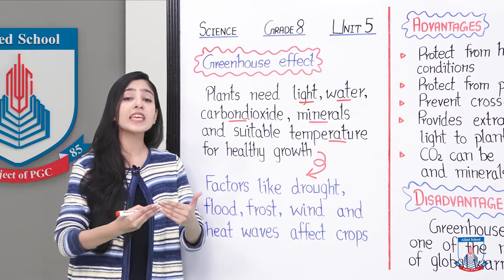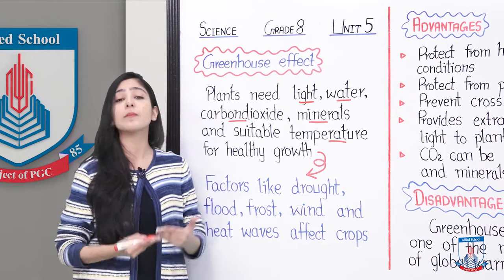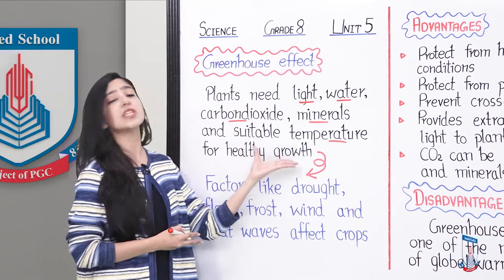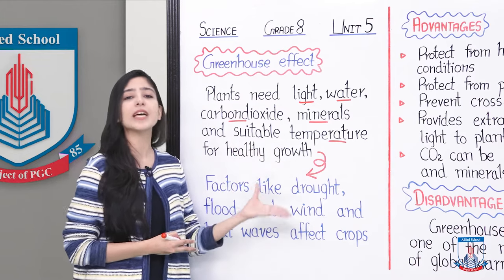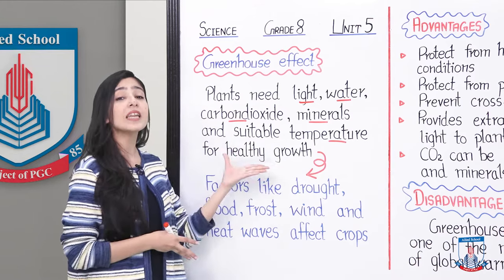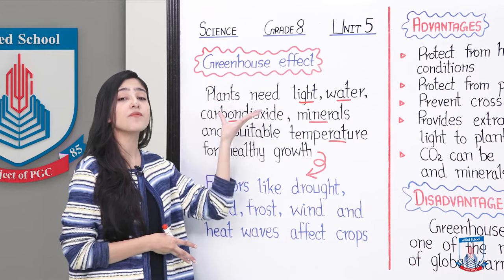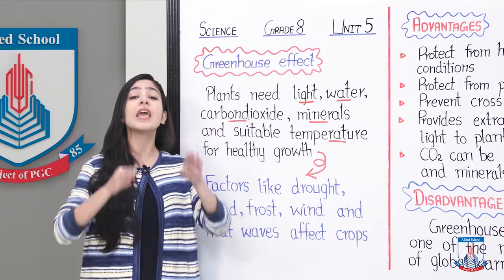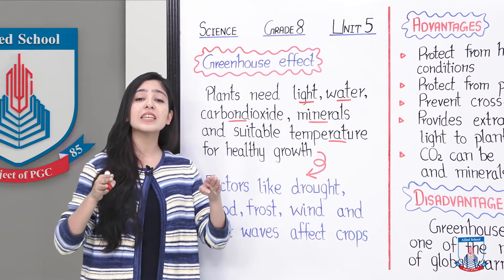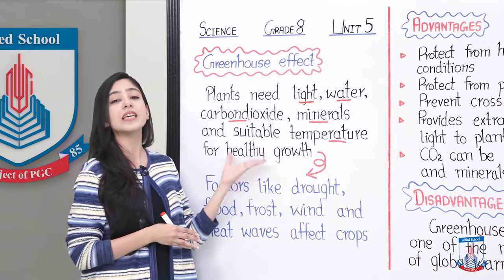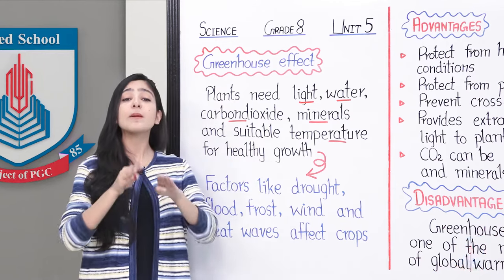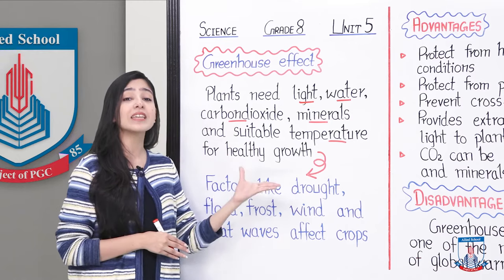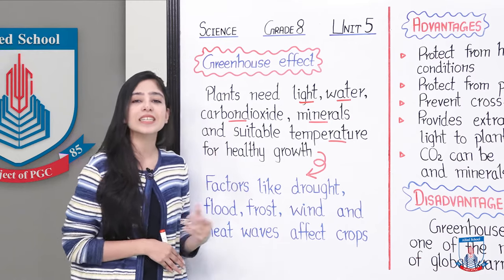In a normal environment — open air, fields, or gardens — it is easy to grow plants. If we talk about the greenhouse effect, there is an enclosed structure where you build a glass house for plants. In an enclosed environment, plants are grown using the greenhouse effect.